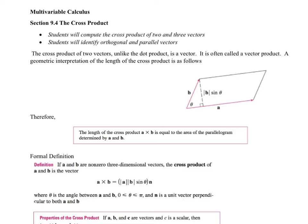Hello, multivariable calculus students. This is Mr. Johnson, and this is section 9.4, which is on the cross product. We just finished studying the dot product, which is our first multiplication of vectors, and now we do the cross product, which is our second multiplication of vectors.